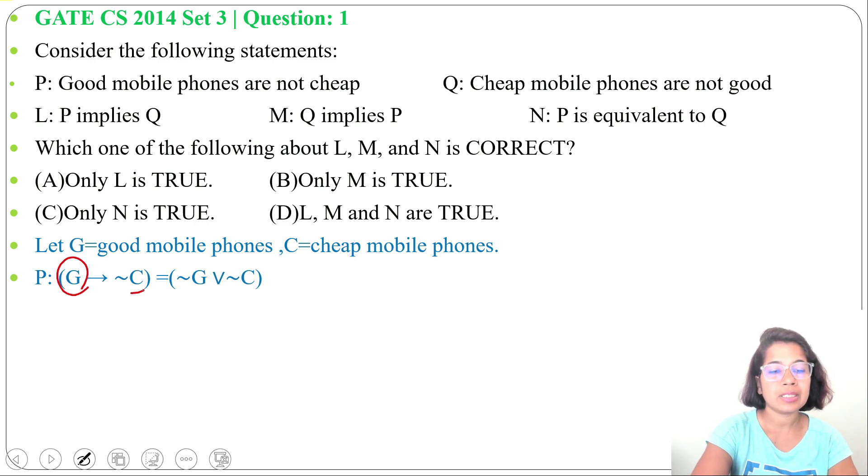And we know P implies Q that we can write as negation P or Q, so here we can write negation of G or negation of C.